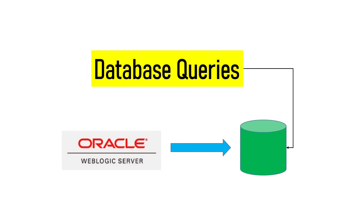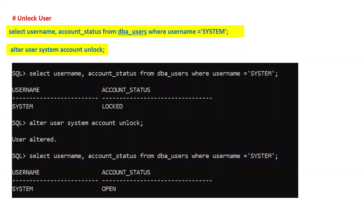Many times there are scenarios where due to some poor performance tuning of your database, or due to certain runtime scenarios, your database may not be performing well, or certain configurations are not good at your database side. One common case is that you will find in the log files that your server is not starting because some database account has gotten locked.